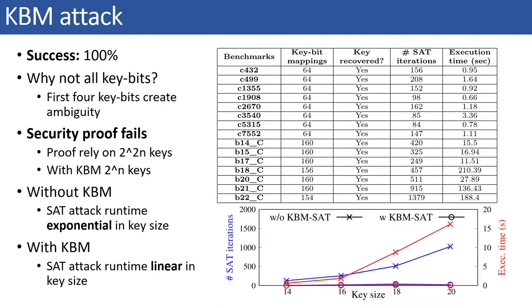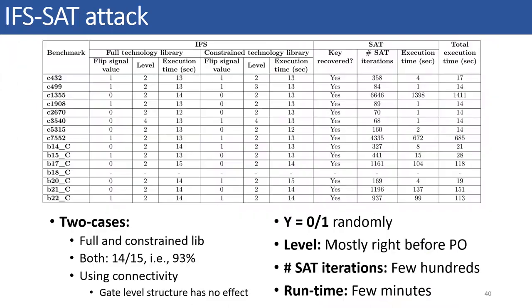Next, we launch a KBM SAT attack on the CASLOCK defense to recover the secret key unlocking the locked circuits. We observed 100% success for all the 15 circuits. Now, without KBM SAT, the SAT attack iterations go to 2 to the power 2N as we observed before. However, with KBM SAT attack, after setting one part of the key, the number of SAT iterations become linear with respect to key size.